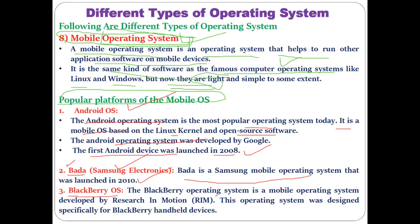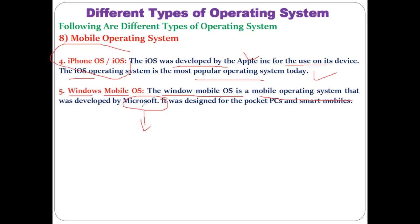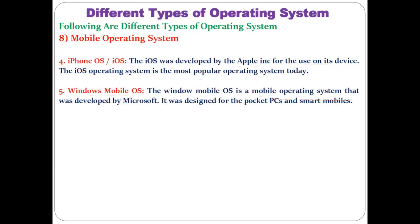Another mobile OS is Bada, a Samsung mobile operating system launched in 2008. The Blackberry Operating System is a mobile OS developed by Research In Motion (RIM) company, designed specifically for BlackBerry devices. Another important and popular OS is the iPhone Operating System, iOS, developed by Apple for use on its Apple mobile devices — one of the most popular OS platforms in high-end mobiles. Windows Mobile OS is a mobile operating system developed by Microsoft, designed for pocket PCs and smart mobiles.